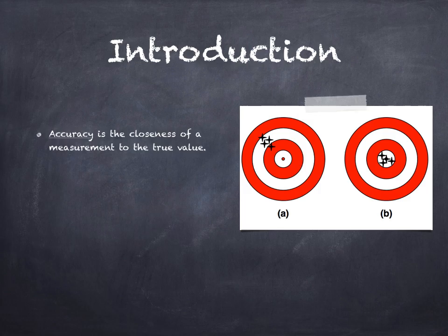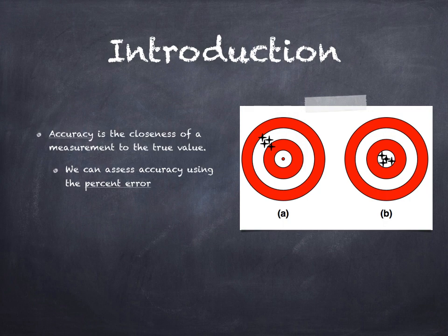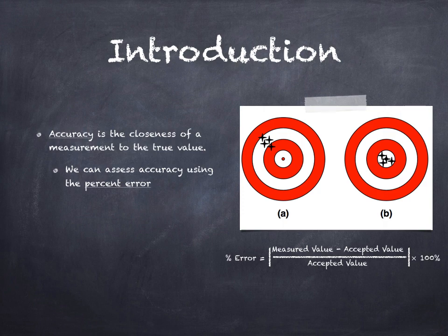When we make measurements in lab, we can use percent error to assess accuracy. Percent error is calculated by taking the difference between the measured value and accepted value, dividing by the accepted value, and multiplying by 100. We usually take the absolute value of the ratio first.